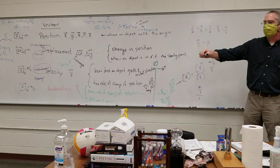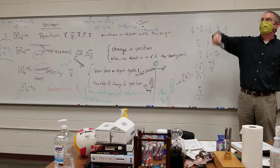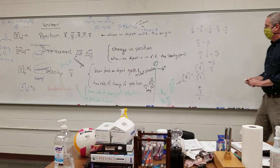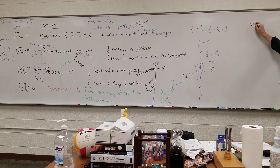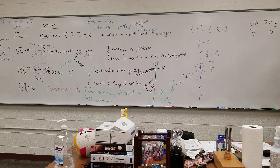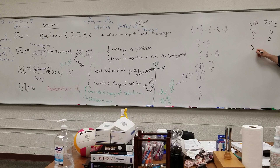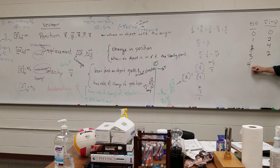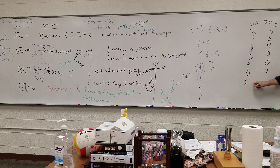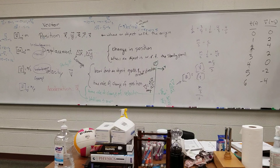I'm going to assume up is positive, so the object goes up and then down. Time is zero, velocity was zero. At one second, two meters per second. Two seconds, four meters per second. Three seconds, two meters per second. Four seconds, zero — that's the peak. Five seconds, negative two. Six seconds, negative four. And we'll stop it there. So this is an object that goes up and then comes back down.